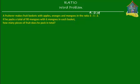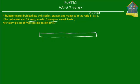It says that if he packs a total of 90 mangoes with 6 mangoes in each basket, how many pieces of fruit does he pack in total? Let's suppose that this is a fruit basket — one of the fruit baskets that he's making, and he's packing apples, oranges, and mangoes in the ratio 3 to 5 to 2.